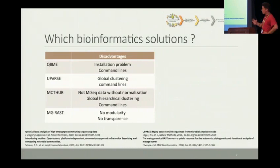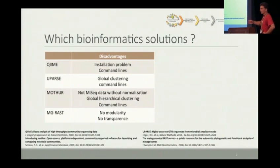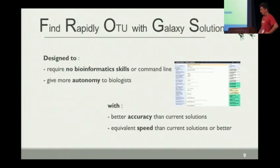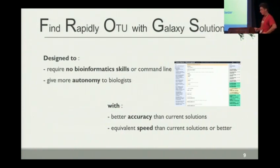You also have problems in the manner they perform clustering, or how they select thresholds to get results. And sometimes you can't analyze multi-site data or things like that. So there is FROGS, which is designed for people who don't have real bioinformatics skills and want to analyze data autonomously, but we also want to keep accuracy — and maybe better accuracy — with equivalent or better speed than concurrent solutions.